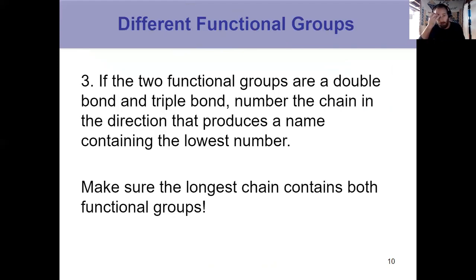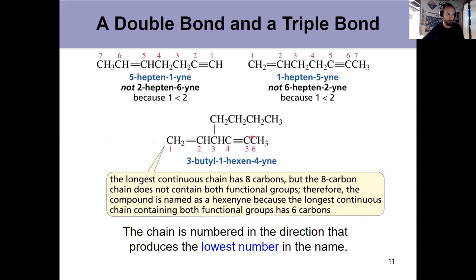Now what about if I have a double bond and a triple bond? I've got something that wants to name it en and another one that wants to end it en, right, E-N-E and Y-N-E. In that situation, I'm going to number the chain in a direction that produces a name with the lowest number, provided it has both the double bond and the triple bond in it. And then I go E-N number Y-N-E. So this number that comes first tells me where the double bond starts, and then the number that comes second tells me where the triple bond starts, always going for the lowest possible number in the name.